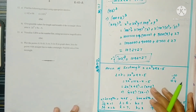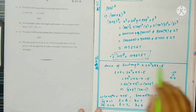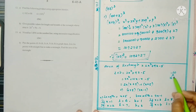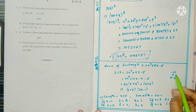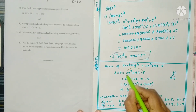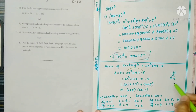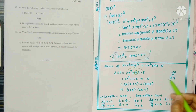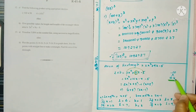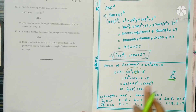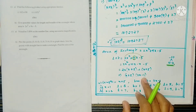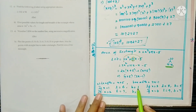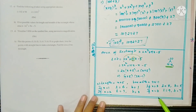Question 12b: Give possible values for the length and breadth of a rectangle whose area is given as a polynomial. Factorize: find factors of the constant term whose sum gives the middle coefficient. Split the middle term to get (x + 2)(2x - 1). So length = (x + 2) and breadth = (2x - 1). For x = 1: l = 3, b = 1; for x = 2, x = 3, x = 4, calculate similarly.